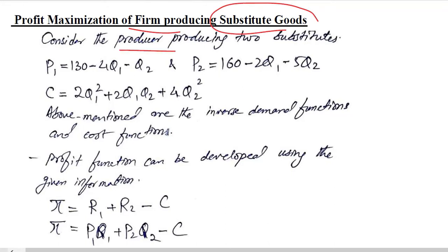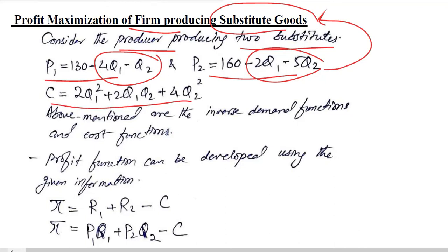There is a producer who is producing two substitutes. P1 and P2 are the inverse demand functions dependent upon Q1 and Q2 at the same time, so they are substitutes or related goods. The cost function of producing these two substitutes is also given.